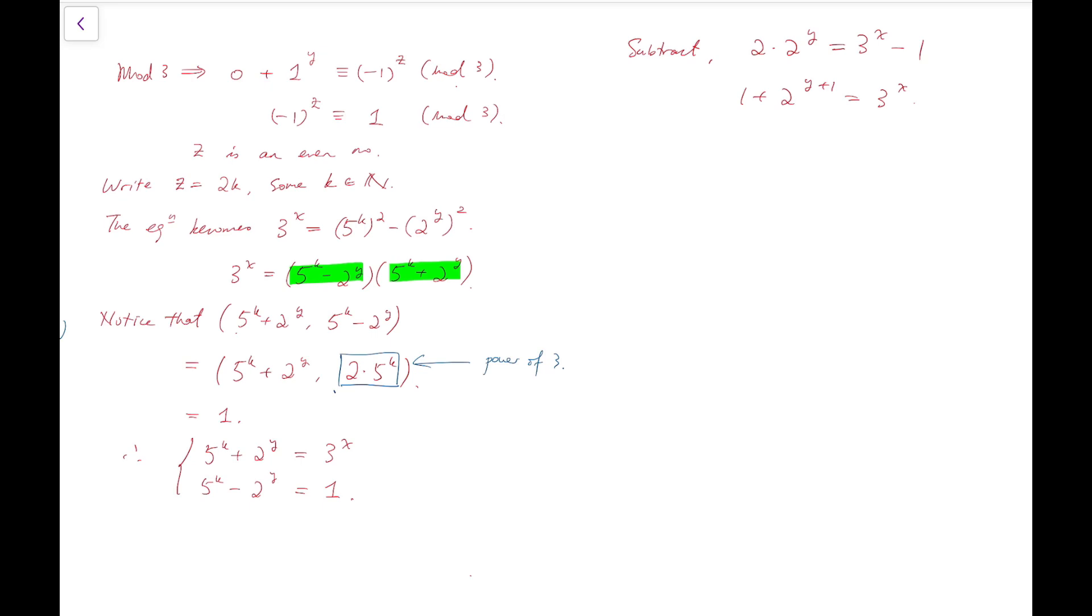Now of course, you may try to solve for k and y by simply looking at this equation. It's also possible, but I find dealing with powers of 2 and 3 relatively simple. So I'd rather go for this method. Feel free to suggest how you solve by considering 5 to the k minus 2 to the y equals 1 in the comments.